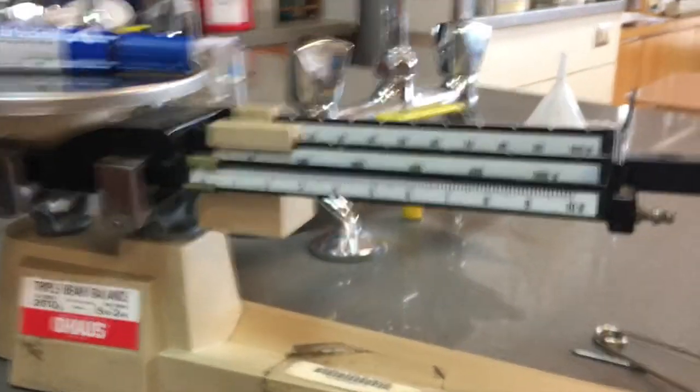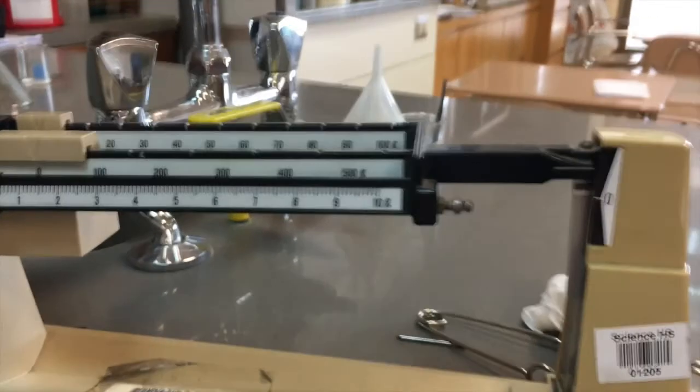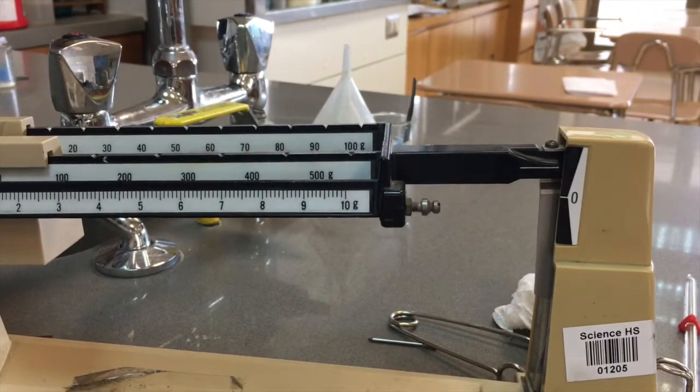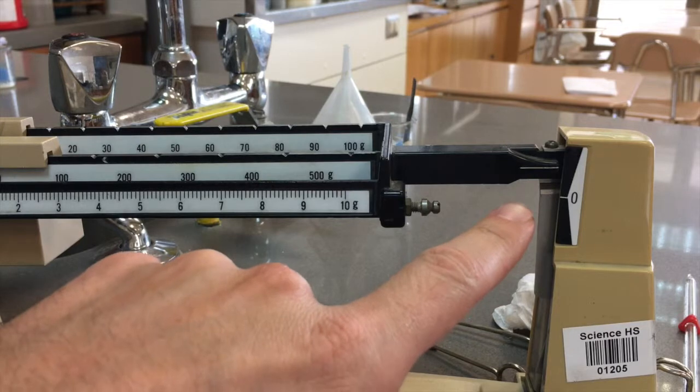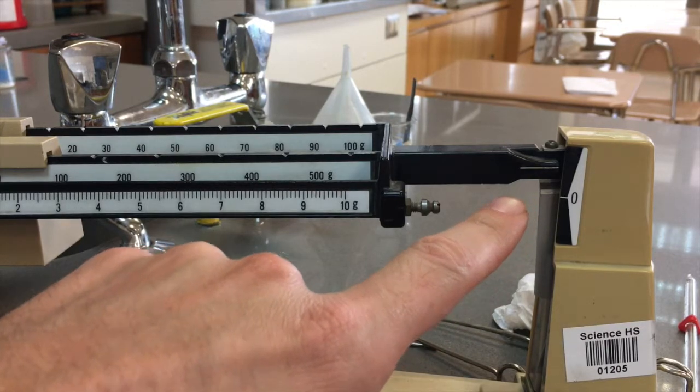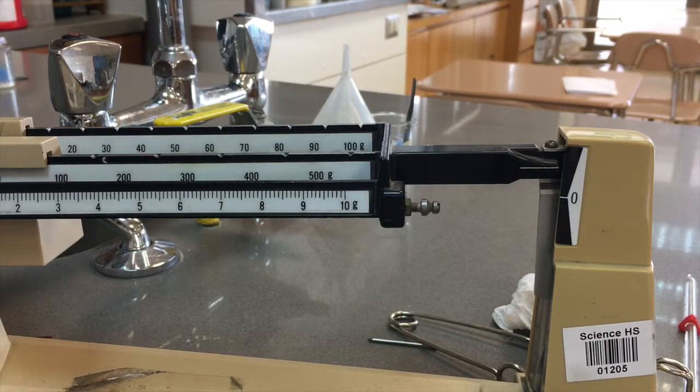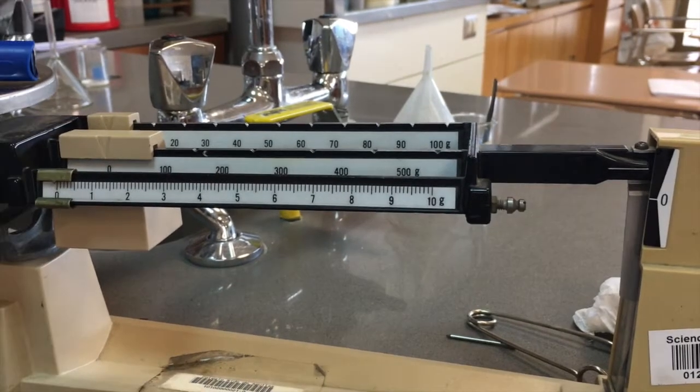And then you can see that, if I pan over here, excuse the pun, you can see that the lines here are not matching up. Your goal is to match up those two lines, and you do that by sliding the sliders over.